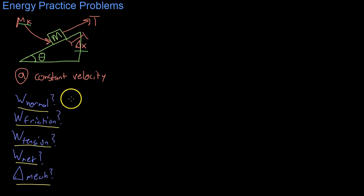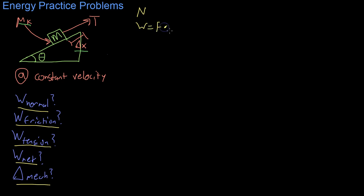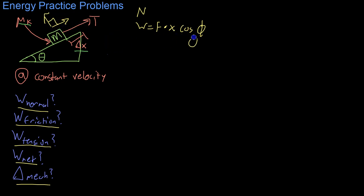We'll start off by looking at the work done by the normal force. Work equals force times distance times the cosine of the angle phi between them. The block is moving up the ramp, and the normal force acts perpendicular to that motion. We know that cosine of 90 degrees is zero; therefore, the normal force does zero joules of work.